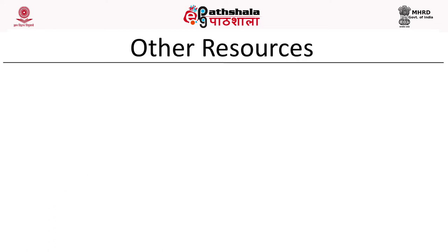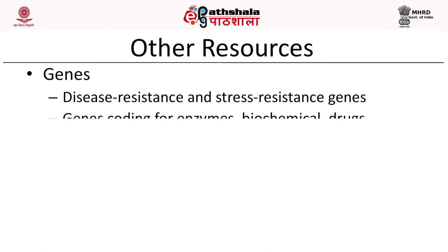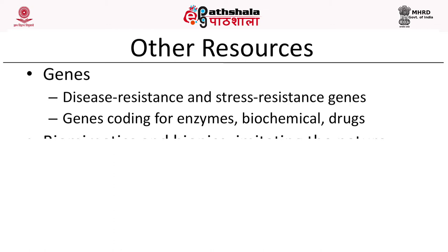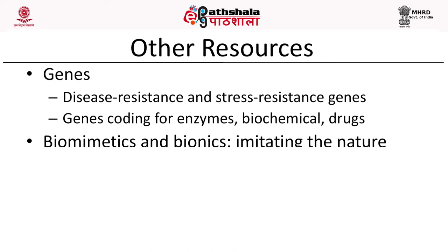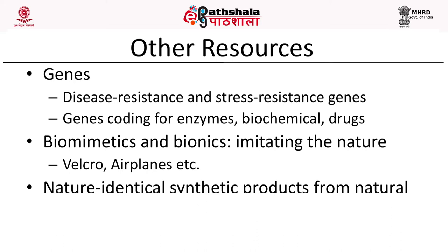There are several other resources provided by global biodiversity, including genes. A number of genes that provide disease resistance, stress resistance, or high-yielding traits can be obtained from organisms and cloned into genetically modified plants or animals. Genes coding for enzymes, biochemicals, and drugs are also valuable. One example is insulin: the gene coding for insulin can be obtained from human pancreas, cloned into E. coli, and produced commercially.